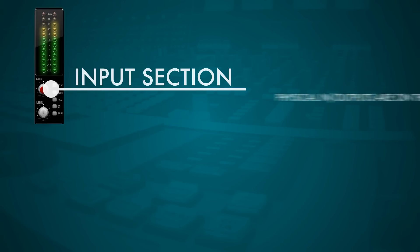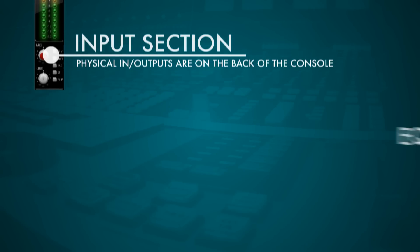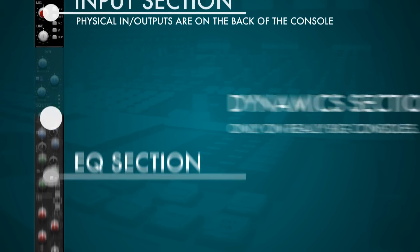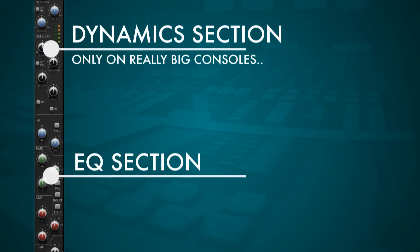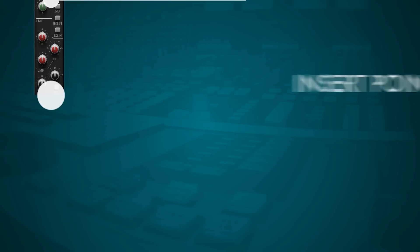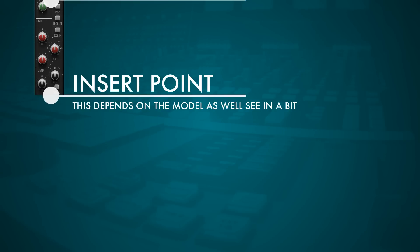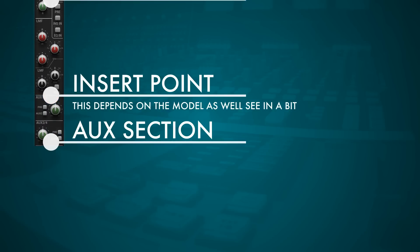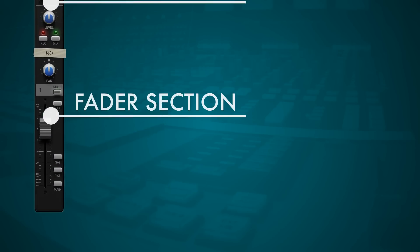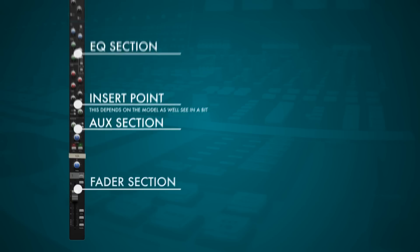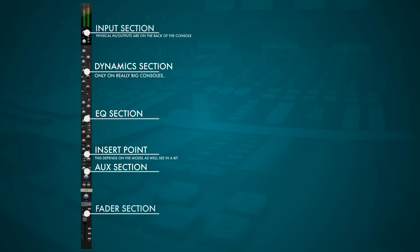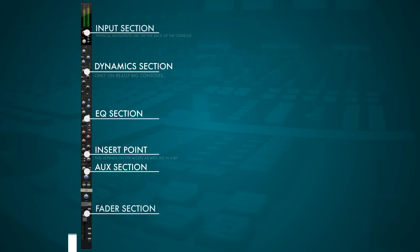On the top we find the input/output section; below that the EQ section, and on really big consoles a dynamics section. Then we'll find the insert point, below that the auxiliary section, and below that the fader section — our output section. Depending on the model, we've got a routing section on the top or bottom of the channel strip. We can visualize the signal flow going from top to bottom.